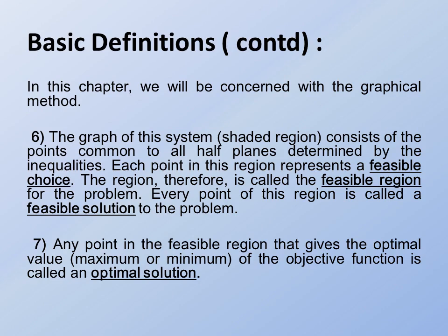The seventh definition: any point in the feasible region that gives the optimal value — that is, the maximum or minimum value — of the objective function is called the optimal solution. For example, if we solve a problem and get extreme solutions like 10 and 10,000, then 10,000 is the maximum and 10 is the minimum. Both are called optimal values and the preferred solution is the optimal solution.